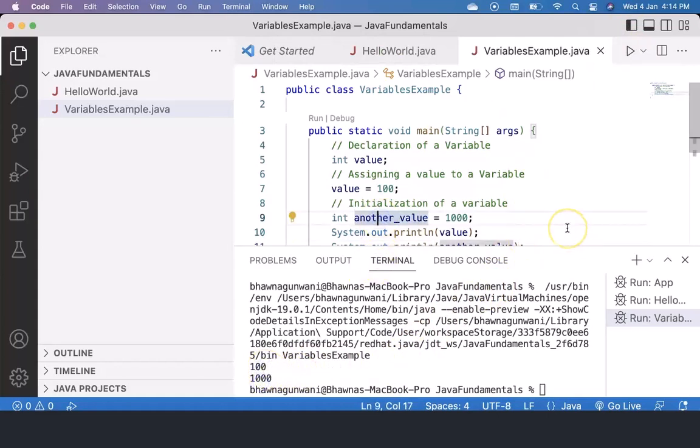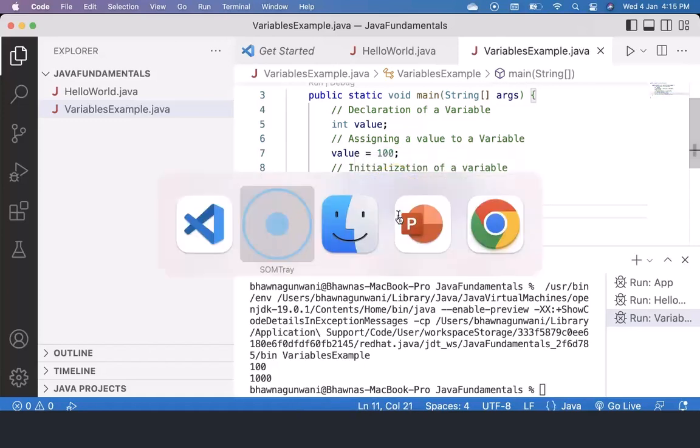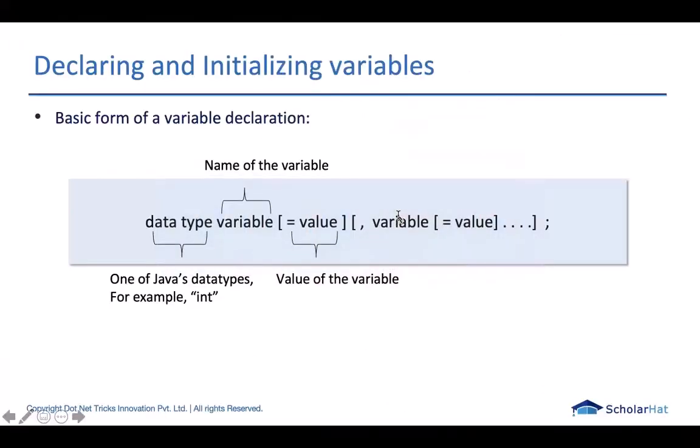So guys, this is how to declare a variable. At the later stage of the application or program that we are executing or writing, we can change its value by reassigning a value to it. But if we already know the initial value of a particular variable to start with, we can assign the value at the same time where we are declaring it. I hope you guys have a clear idea how to work with basic operations of declaration, assignment, and initialization of a variable.